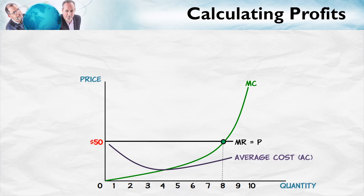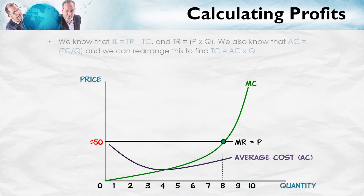Whenever the marginal cost is below the average, the average is falling. Whenever the marginal cost is above the average, the average is rising. And where marginal is just equal to average, the average is flat — in other words, we are at the minimum point of the average cost curve. Now, I said we could use the average cost curve to figure out and show profit on the diagram. We can do that with just a little bit of rearranging.